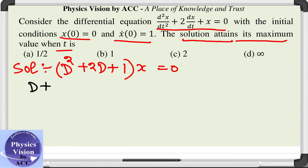...can be written as (D + 1)(D + 1) = (D + 1)² = 0, which implies D = -1, -1 (repeated roots).